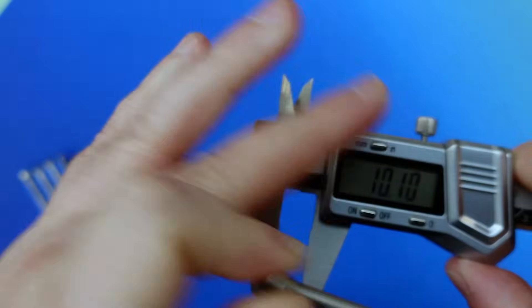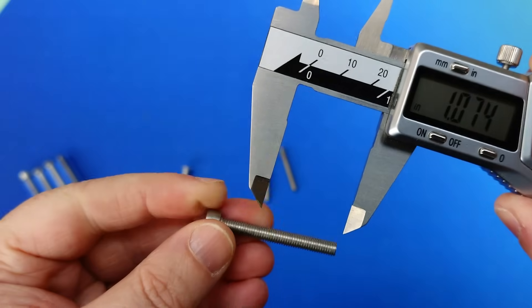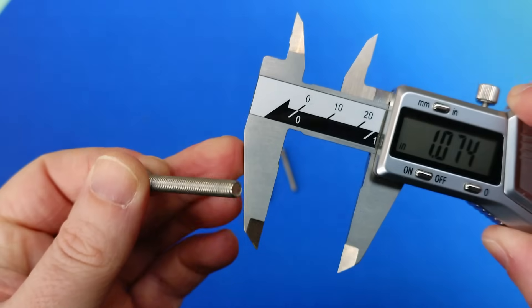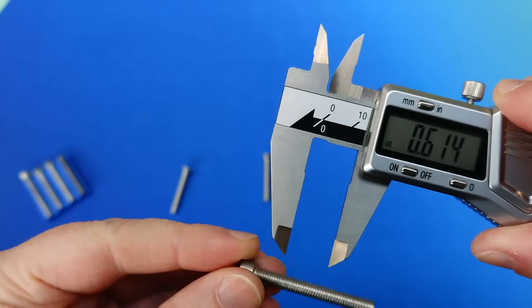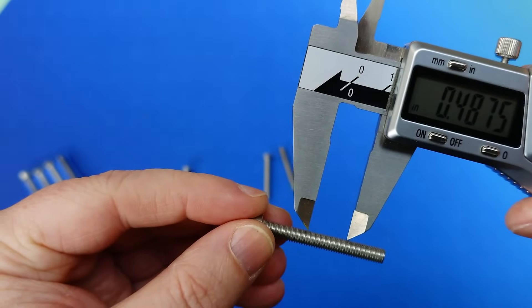Similarly, for TPI, we set our calipers to an inch and count the number of threads in between that spacing. If the screw's ever shorter than an inch, say, half an inch, you just measure half an inch and then double the number of threads to form what is essentially a full TPI measurement. For example, four turns in half an inch, so eight turns per inch.